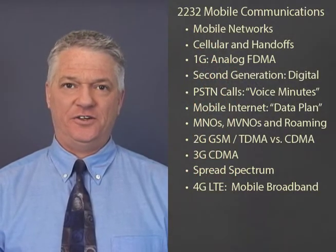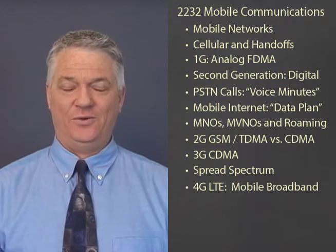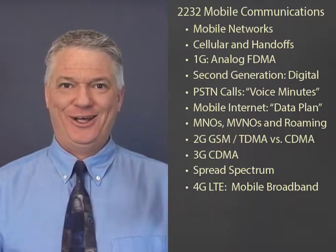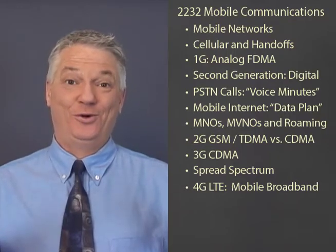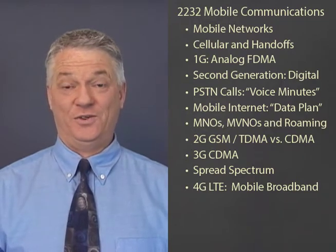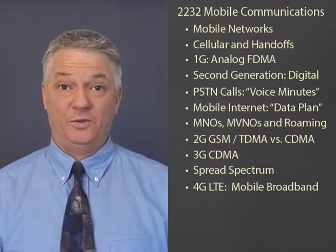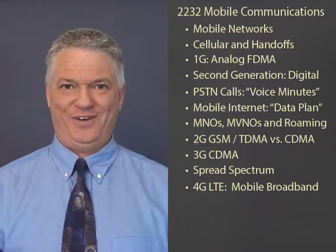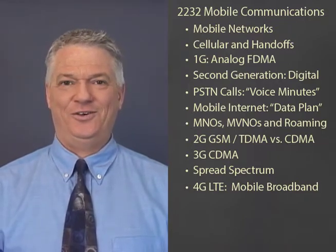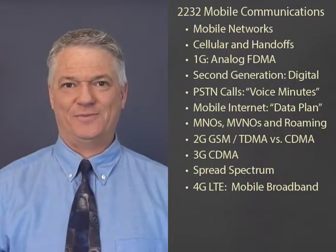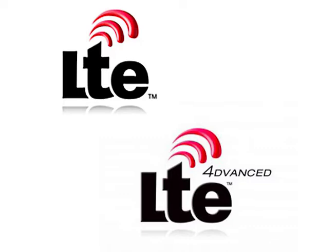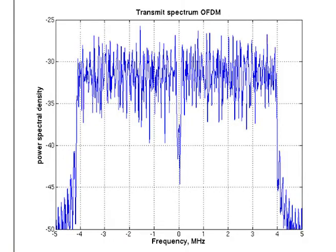We'll see how Steve Jobs ended the standards war for fourth generation with his iPhone by only letting carriers in the GSM/TDMA/UMTS camp have the iPhone. The carriers in the other camp threw in the towel and went with their version for fourth generation, which is called LTE. With LTE we're back to frequency division multiplexing, but with huge advantages over the first generation. We'll look at how you can be assigned multiple parallel channels, run modems on each one for massive parallel downloads, and understand how LTE can transmit different groups of 6 bits to many different people at the same time on the same carrier using OFDMA.